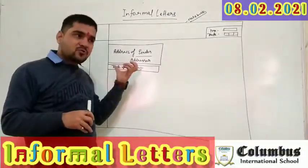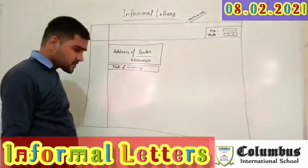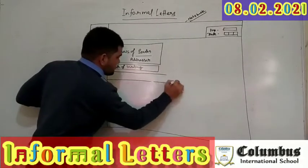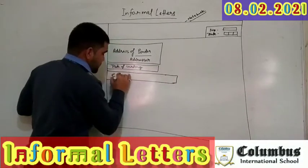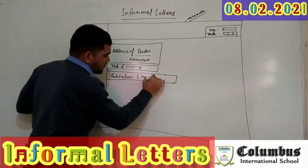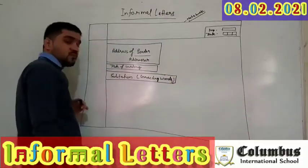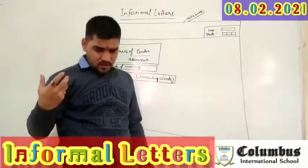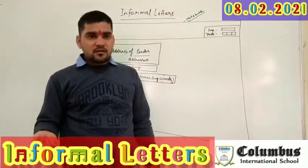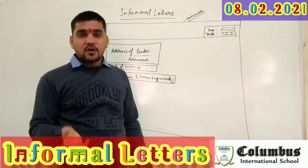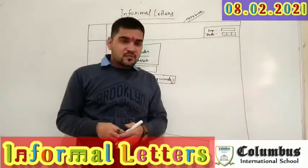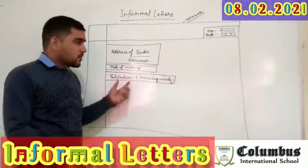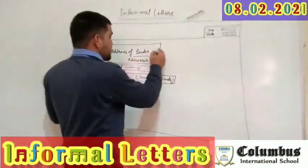Further, at the second column we will write the date of writing — meaning on which date I am going to write this letter. After the date comes the salutation. Salutation means greeting words. Suppose I am going to write a letter to my uncle, my father, or my cousin — I will write 'Dear Uncle' or 'Dear Father.' Salutation means I am paying my respect towards them.